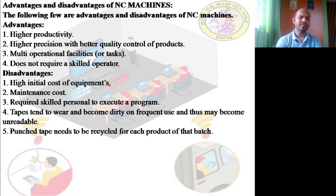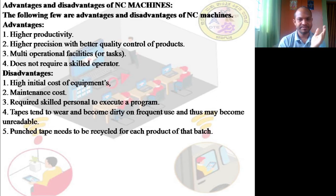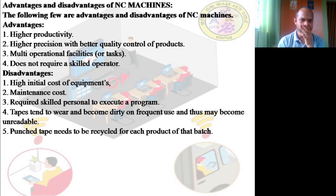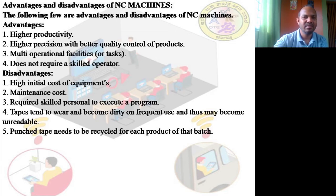A major disadvantage of NC is that the punch tape needs to be recycled for each product in the batch — as the product changes, the punch tape also needs to be changed. This limitation can be overcome by using Computer Numerical Control (CNC), where even during the process itself the program can be changed. In NC, whenever the product changes, the punch tape must also be changed to give a different set of instructions.